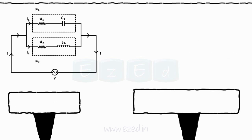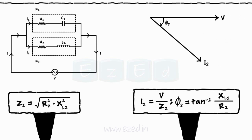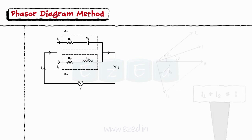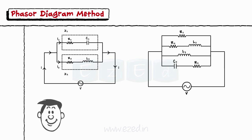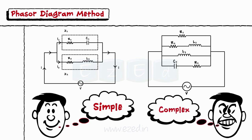Similarly, for branch 2, the impedance Z2 equals the square root of R2 squared plus XL2 squared. The current in branch 2 equals V upon Z2, and the phase angle is tan inverse of XL2 upon R2. Now being inductive in nature, the current lags the voltage by an angle phi. Thus the total current I becomes the phasor sum of I1 and I2. This method is suitable for simple circuits with only two branches, but if the number of branches increases, this method becomes complex.